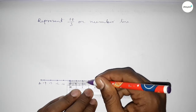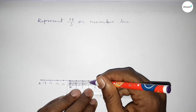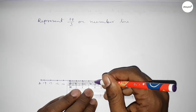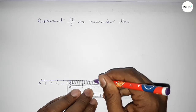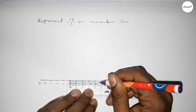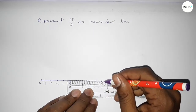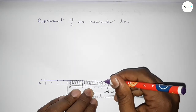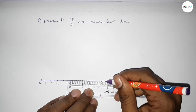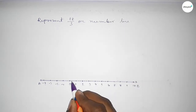Again dividing the distance between 2 to 3 — this is 0.3 something approximately and 0.6 something approximately. Again dividing the distance between 3 to 4 — this is 0.3 something and 0.6 something. By this way we can divide the distance between any two numbers into three parts approximately.